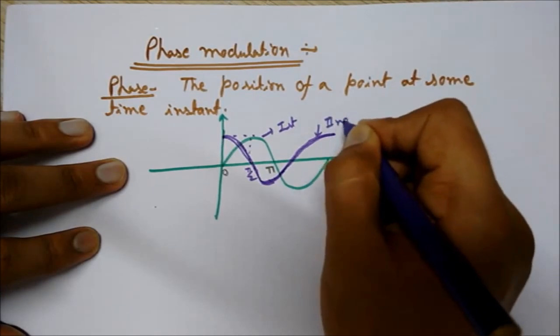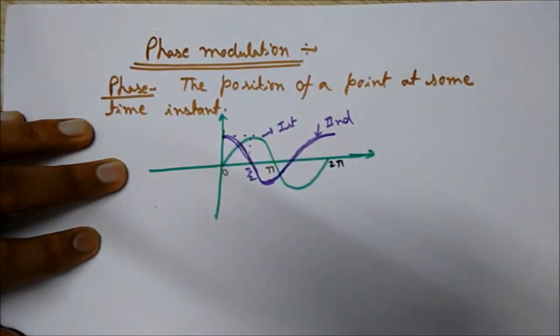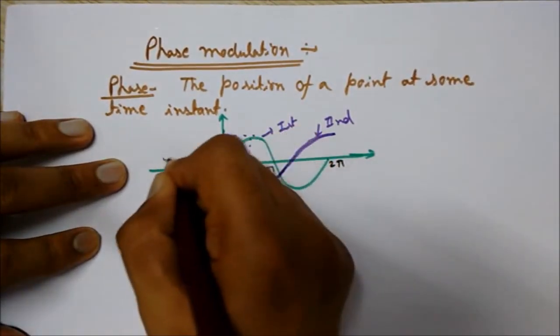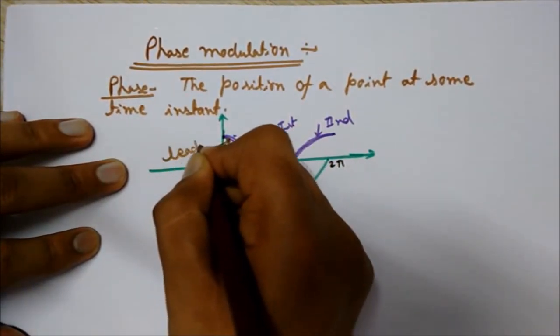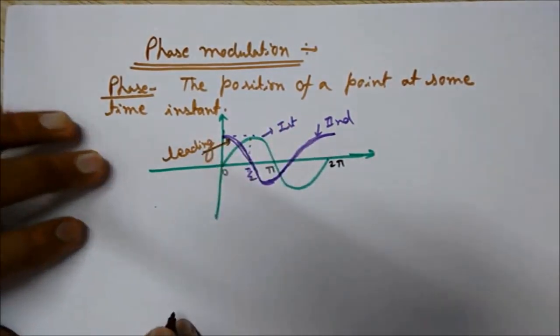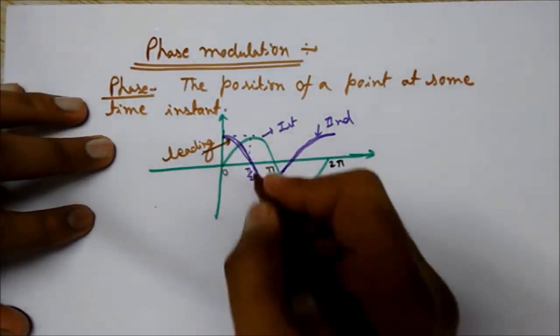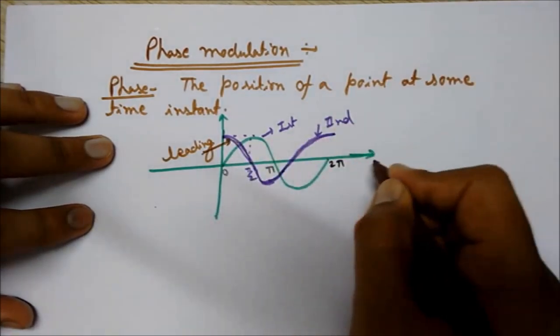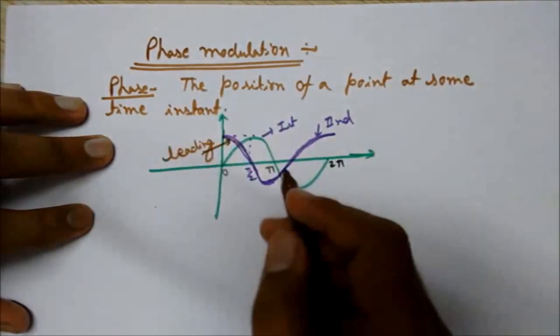This one is the second. And you should know that this one is the leading waveform. This one, leading in phase by 90 degrees or pi by two. As you can see, this wave has been moved horizontally.